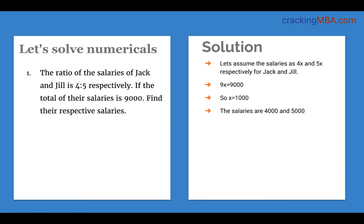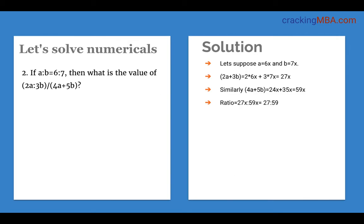The salaries of Jack and Jill are in the ratio 4 to 5 and the total salary is 9000. The salaries are 4X and 5X, and the total is 9000, so 4X plus 5X equals 9000. Therefore X equals 1000, and hence the salaries are 4,000 and 5,000.